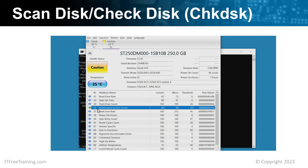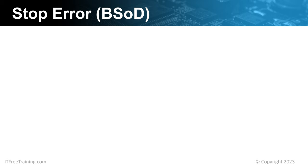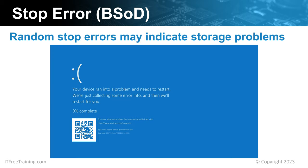Let's have a look at some indicators that you are having problems with your storage. One of the indications is if you have random stop errors. Errors like this can happen for a number of different reasons and may not be because of your storage. When a stop error occurs, a stop code will be given. In the case of storage device errors, the stop code won't be storage-related — it will be because data has been corrupted or could not be accessed and caused something else to crash. Thus, don't expect stop errors to tell you directly that storage is the problem. However, if your computer is having a lot of stop errors, something is causing them and could be storage-related.